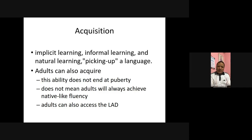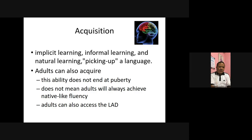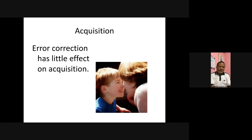We learned when we discussed innatism that there is a separate faculty — a separate part of the brain for learning a language, apart from the faculties we use for learning math and memorizing terms. Now, Stephen Krashen believes that error correction has little effect on acquisition. When you correct the grammar form, it has little effect on acquisition.